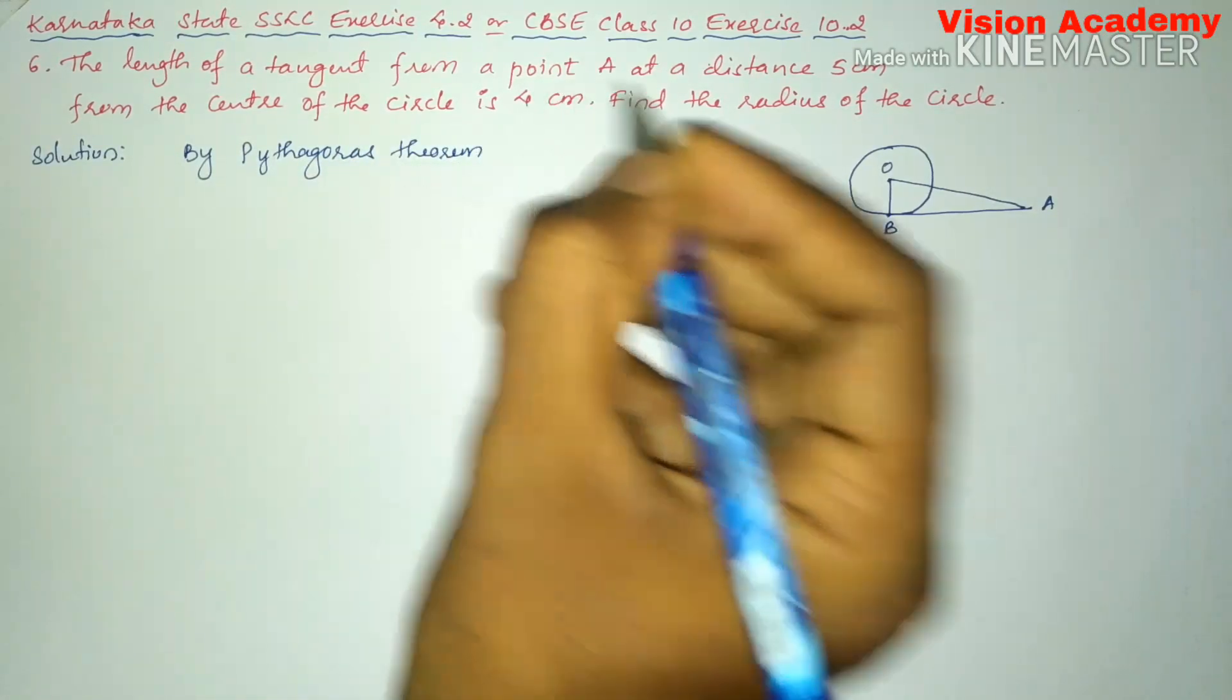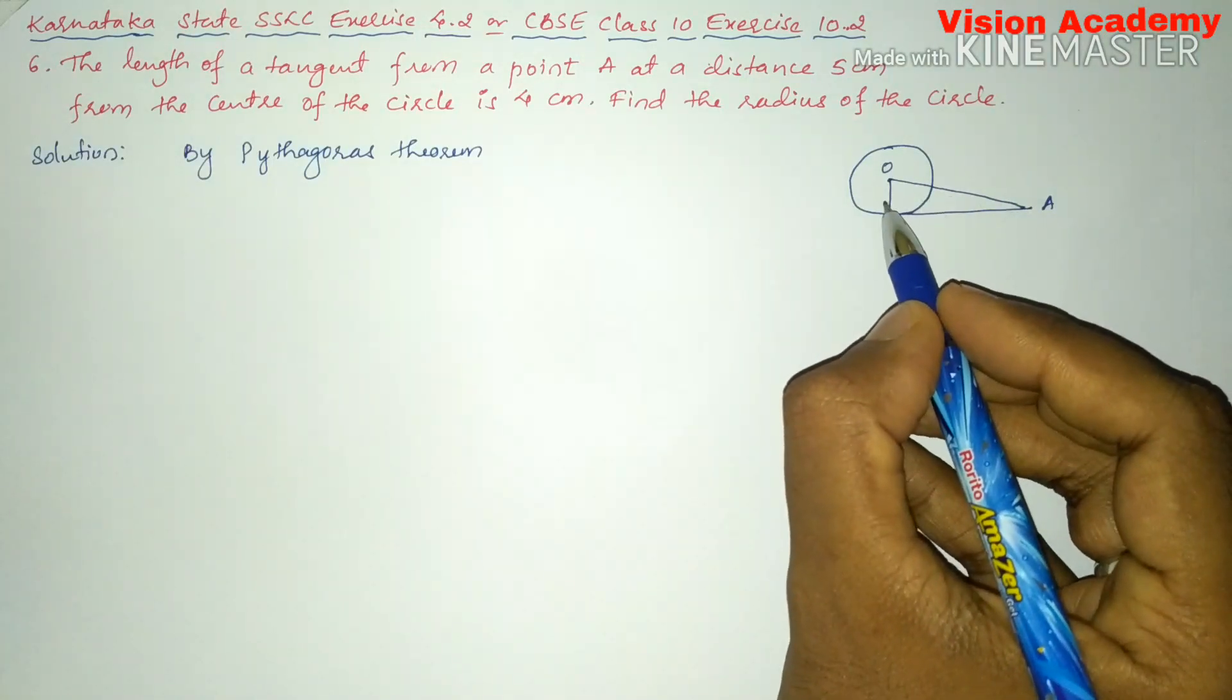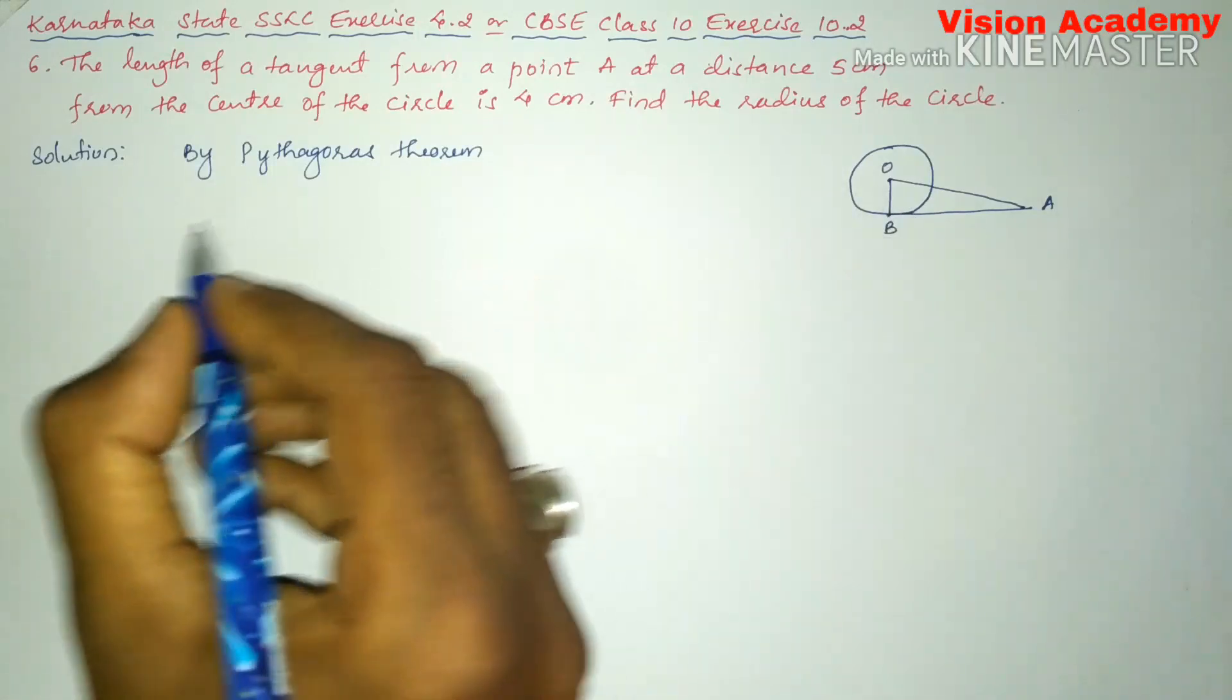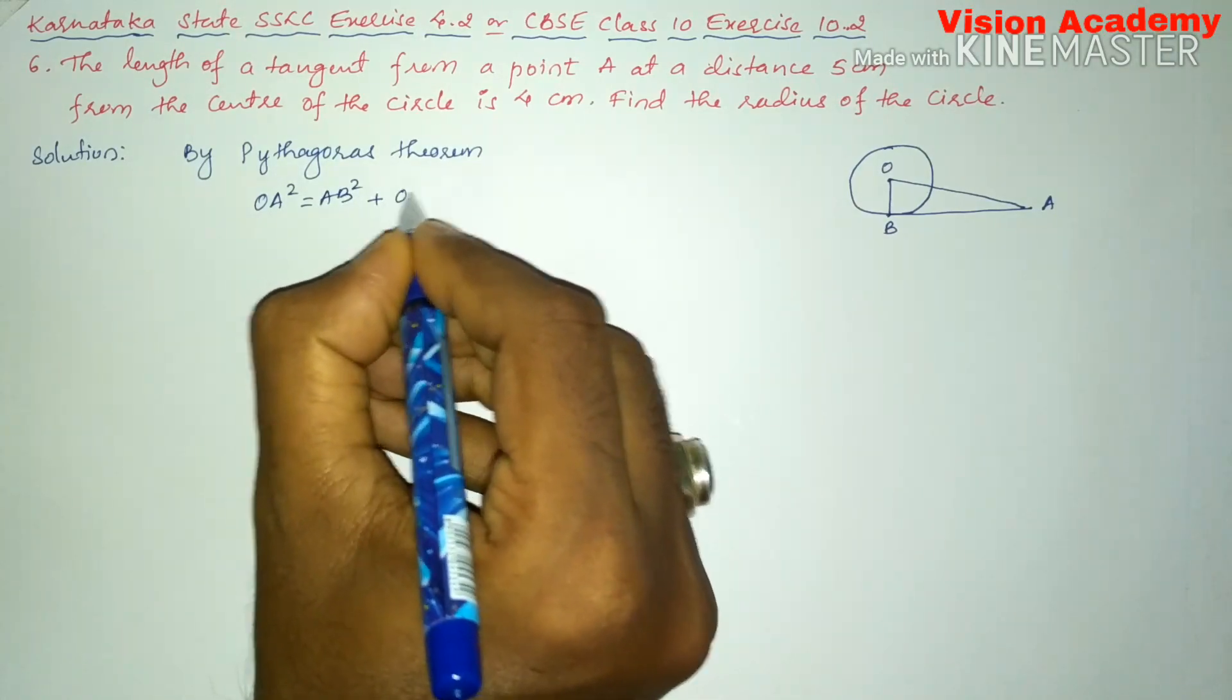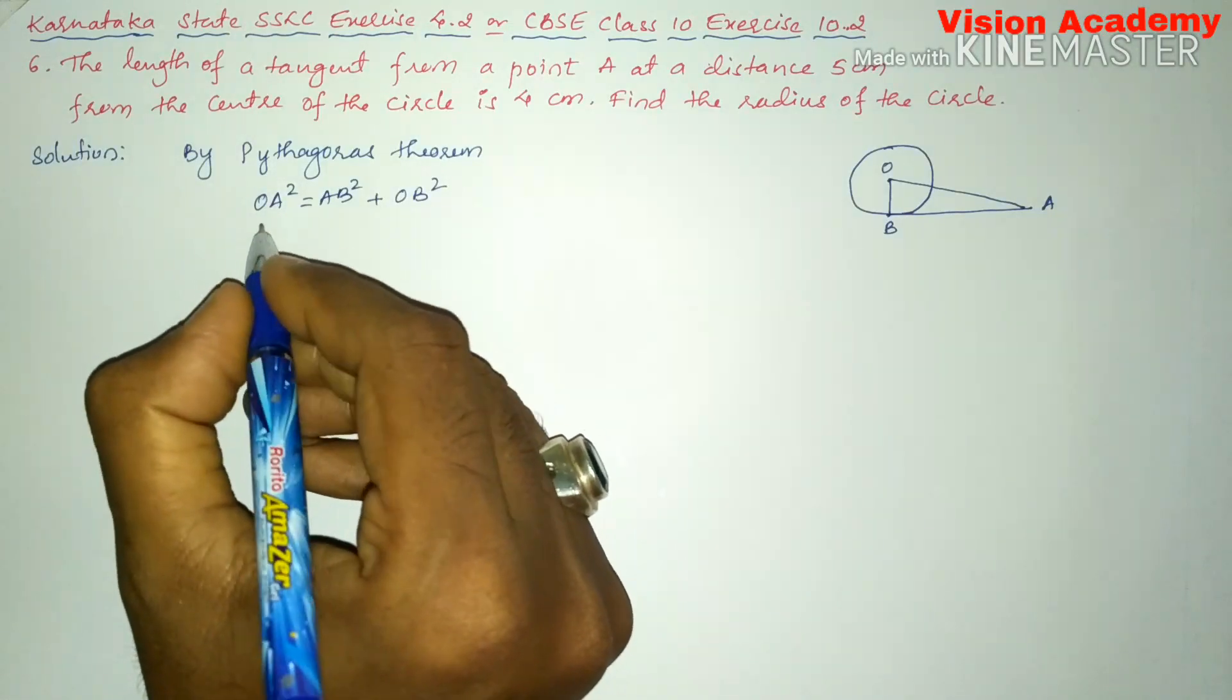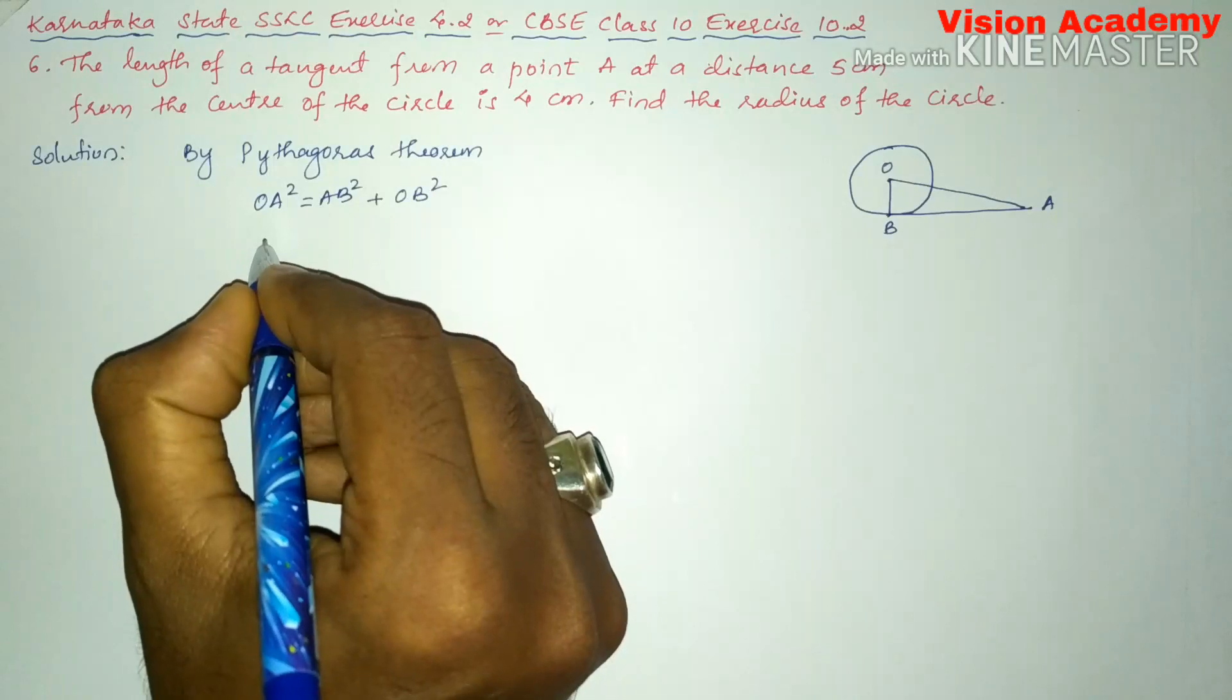We can write, hypotenuse square is equal to sum of squares of adjacent side and opposite side. So, that is OA square is equal to AB square plus OB square. Here we need to find out OB square because we need to find the radius of the circle.